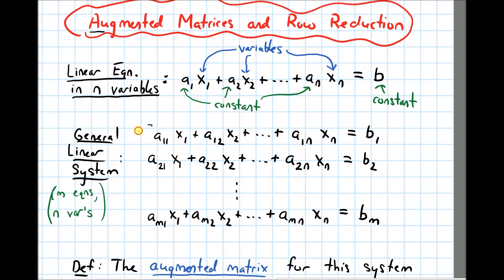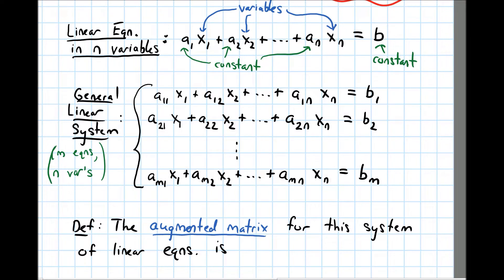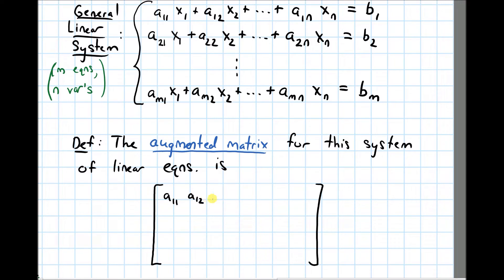In general, if I have a linear system of equations it'll look something like this — m equations and n unknowns. We are now ready to define what an augmented matrix is. The augmented matrix for this system looks like a bracket around all of the entries. The numbers written inside the matrix are the coefficients in all of the equations. So the first row has a sub 1,1, then a sub 1,2, dot dot dot, until a sub 1,n. Then I put the augmented bar, and on the right hand side of that bar I put b1.